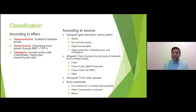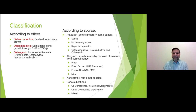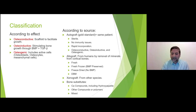Xenografts from other species are not available in practice very much. Bone substitutes are artificial materials that represent some aspects of bone and allow bone to grow into that area — they can have calcium components, other compounds, polymers, or a mixture of the above.